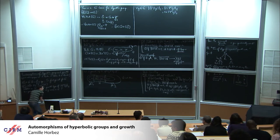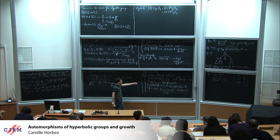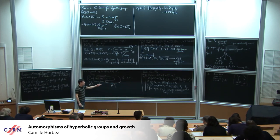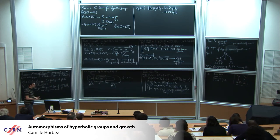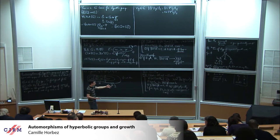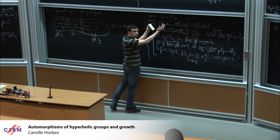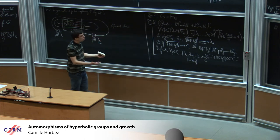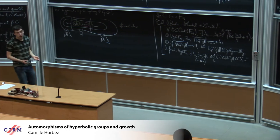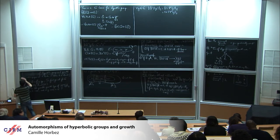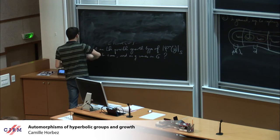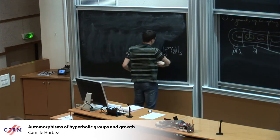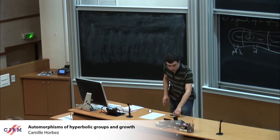The theorem in the context of free groups uses Bestvina and Handel's theory of train tracks for free groups. But the point is that we want to generalize this statement in the context where G is a general hyperbolic group, and in this setting we have no good notion of train tracks. So we needed to use a completely different strategy to attack similar questions in the general setting of torsion-free Gromov hyperbolic groups.